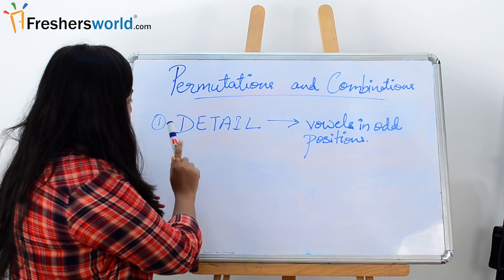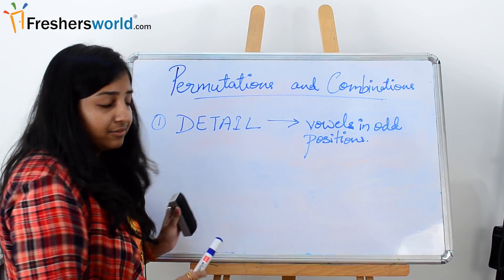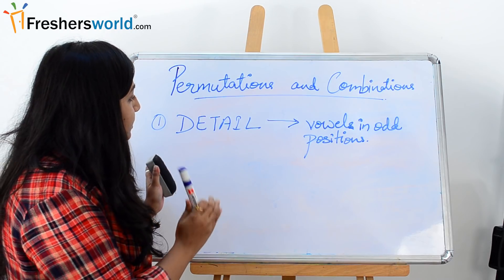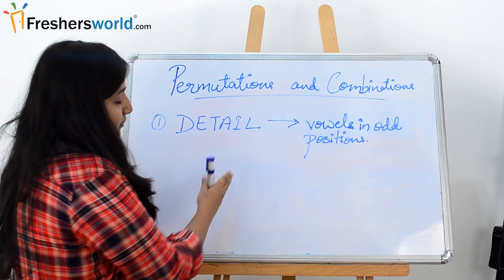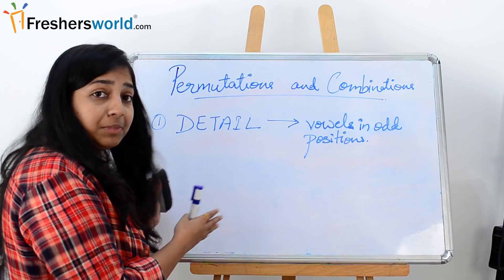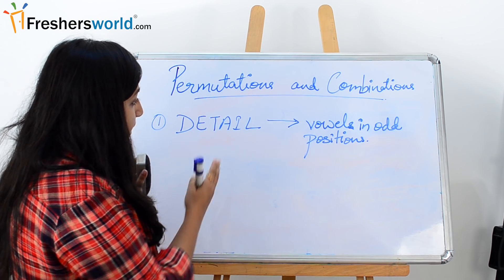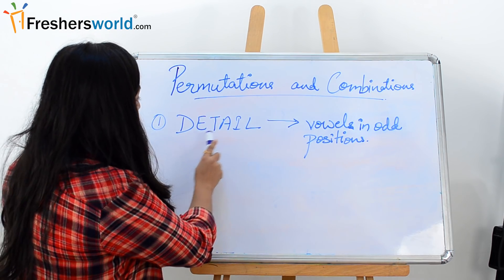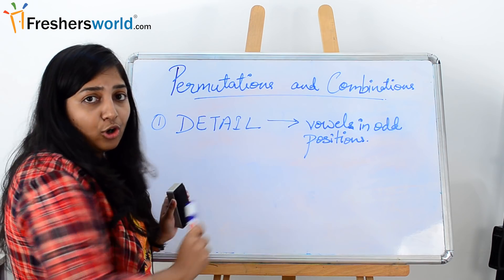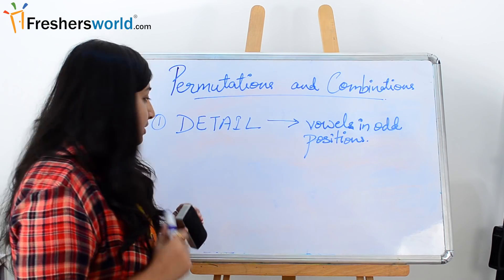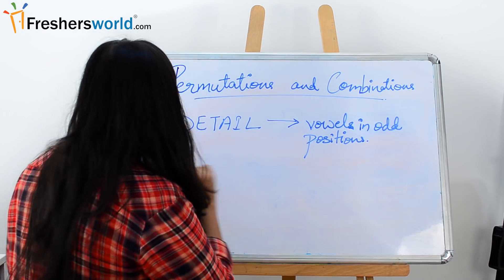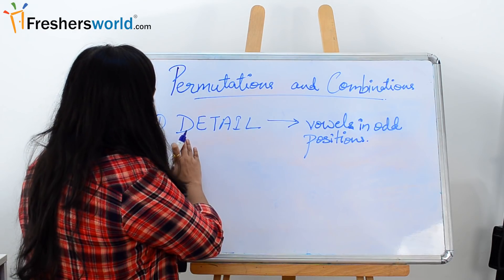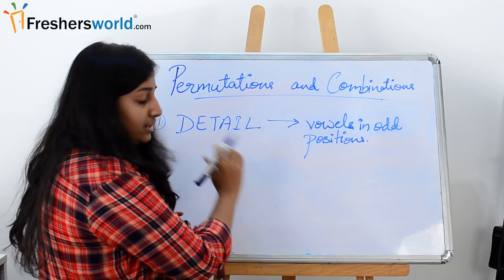First question: if the word DETAIL is given, how many different types of words can be made out of it, not meaningful or non-meaningful words, but the condition is that the vowels in this DETAIL should be in odd positions. So how we will be doing it? First of all, see these are six letter words, so let us position them.